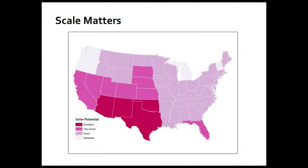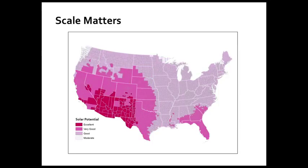Here's an example using a map showing solar potential — how feasible and sustainable it would be to put solar panels on your house and recoup the cost, from the National Renewable Energy Lab. This shows state-level data: Texas and Oklahoma are rated excellent, and even Florida is very good. So this map is fine — we can make a decision with it. If I live in Nevada I'll go buy solar panels, and if I live in Washington State or Michigan, maybe not.